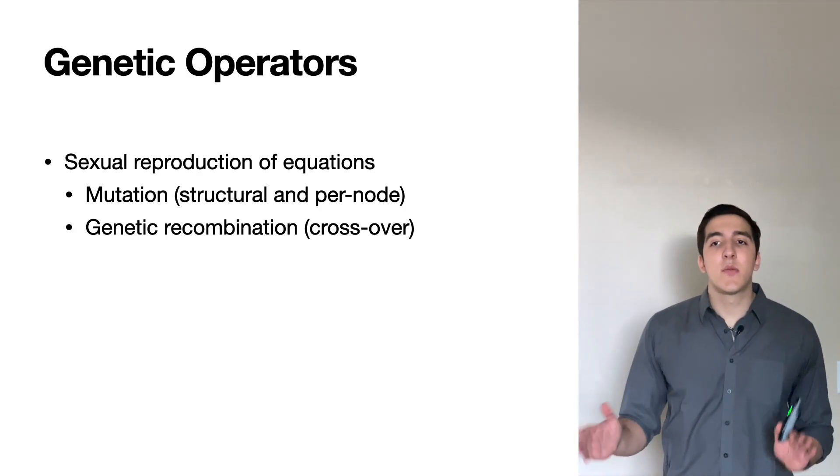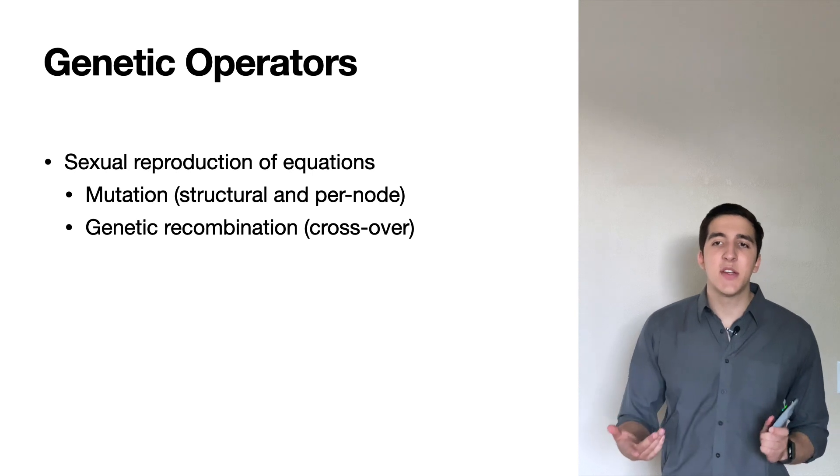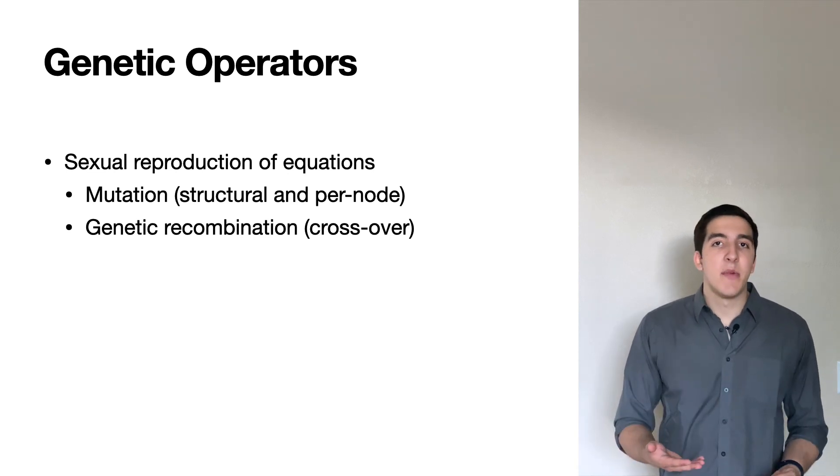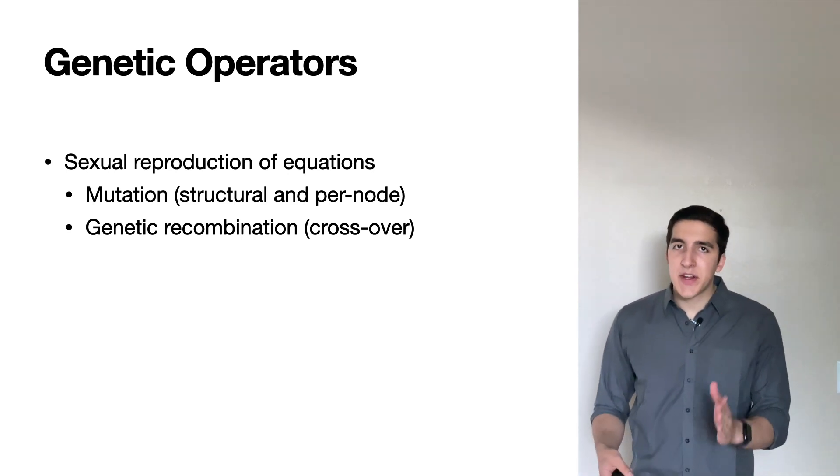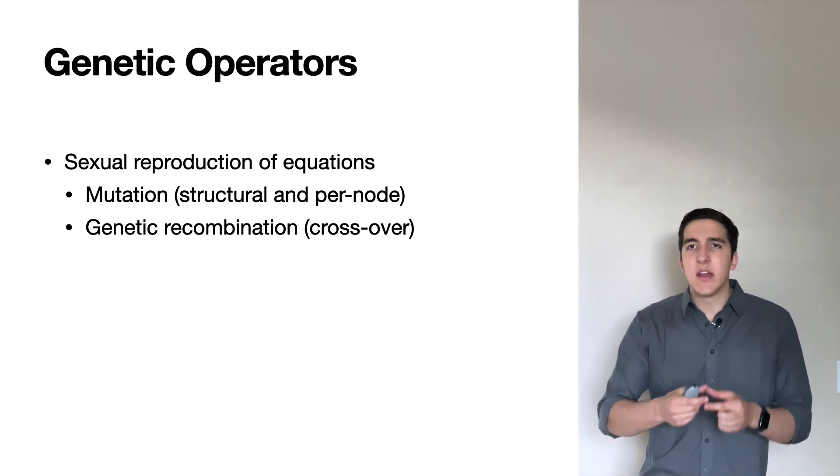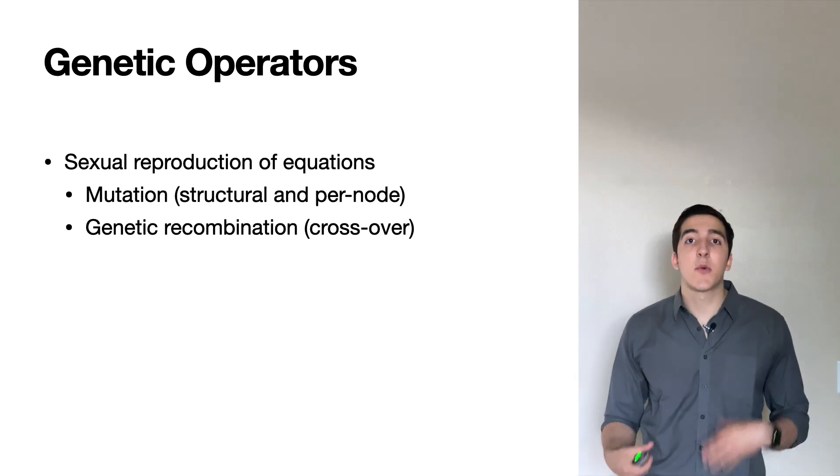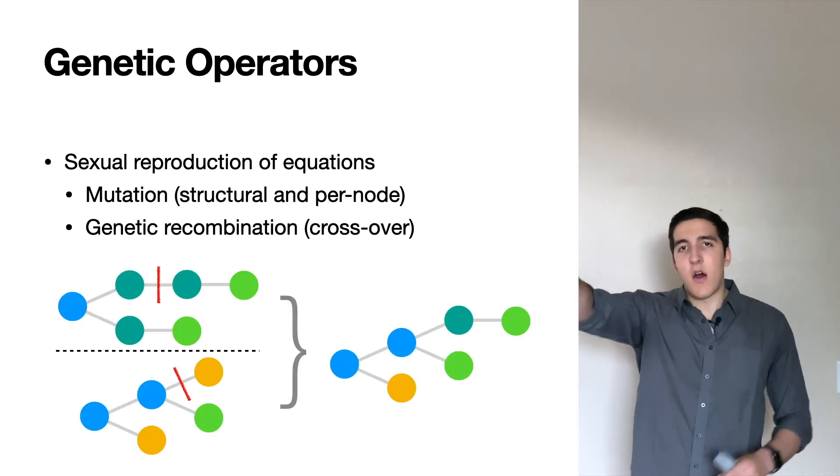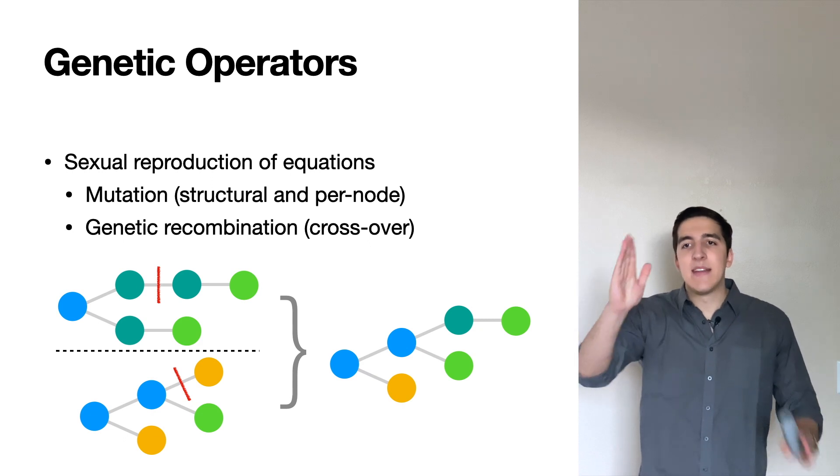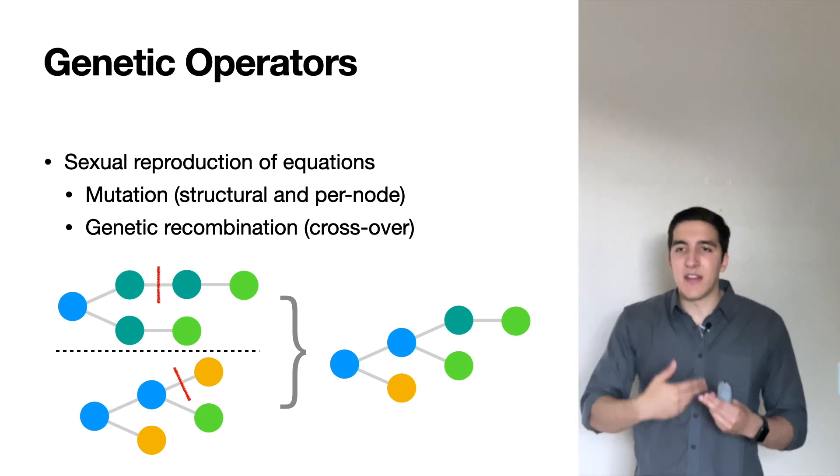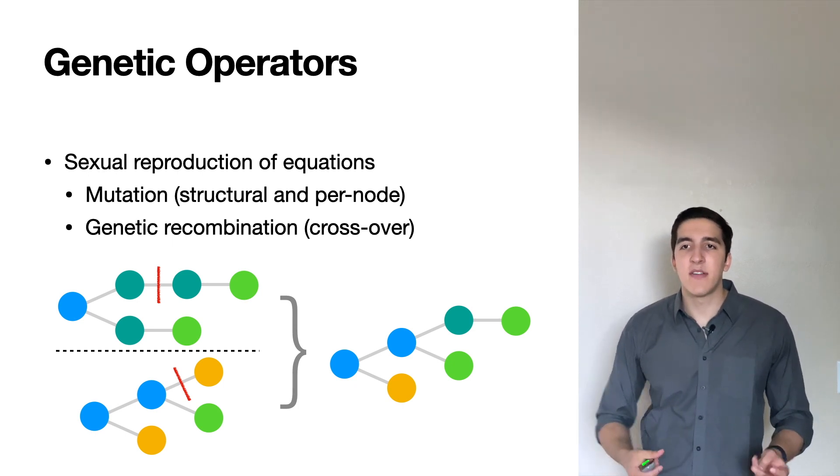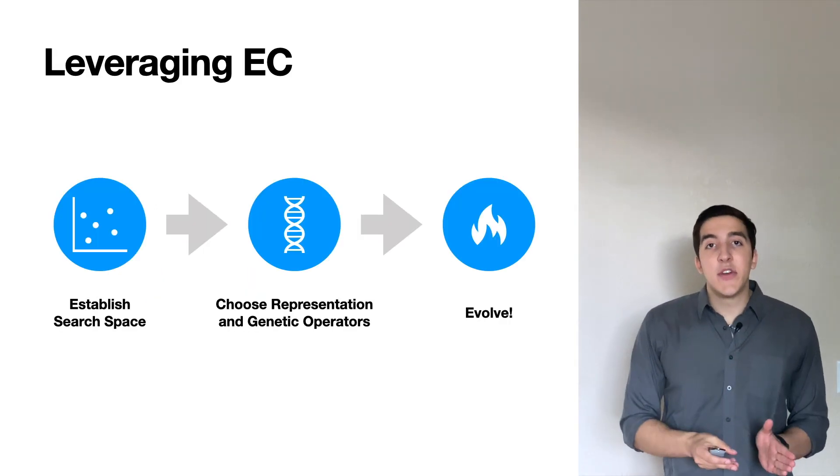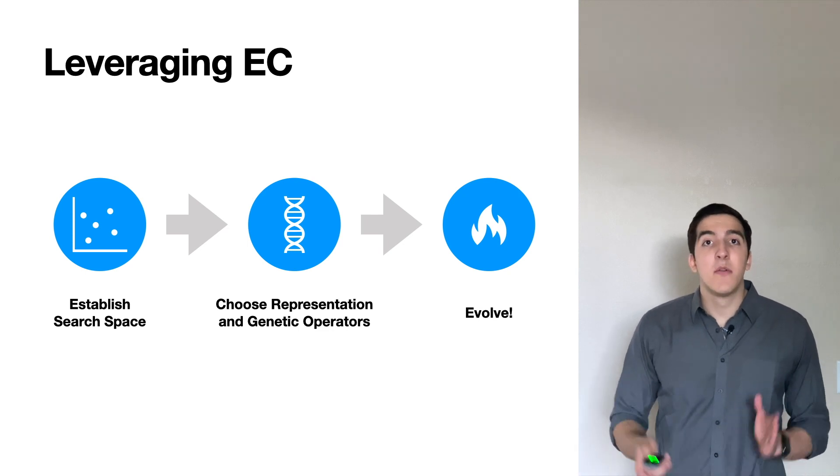So what genetic operators are we using? So we are essentially performing sexual reproduction of equations. So we have mutation, which can happen on a structural and on a per node basis, and we also have genetic recombination crossover. So crossover is particularly interesting. How exactly do you do this with trees? They're not really these string-based structures like chromosomes in biology and in many other GA applications. So we just pretty much select a random point on each parent tree, and that's where we decide to splice the subtrees with each other, replacing them. So we get two children for each two set of parents, and they have different subtrees at these splice points. So that was our search space and our genetic representation and operators. Now we can evolve.